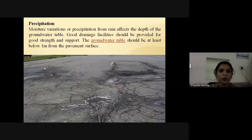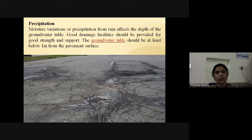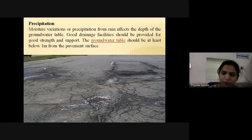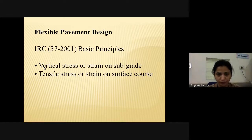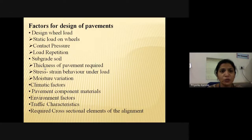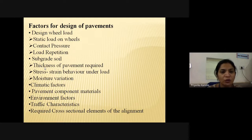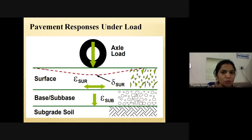Moisture variation or precipitation from rain affects the depth of the groundwater table. Good drainage facilities should be provided for good strength and support. The groundwater table should be at least one meter below the pavement surface. IRC 37-2001 basic principles for pavement design consider vertical stresses or strains on subgrade and tensile stress or strain on the surface course. The factors for design of pavement include static wheel load, contact pressure, load repetition, subgrade soil, thickness of pavement, stresses and strain behavior under load, moisture variation, climatic factors, pavement component materials, and traffic characteristics.